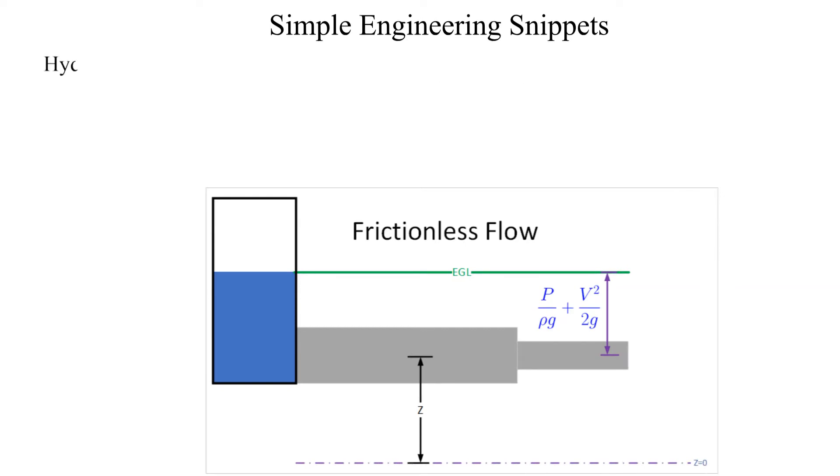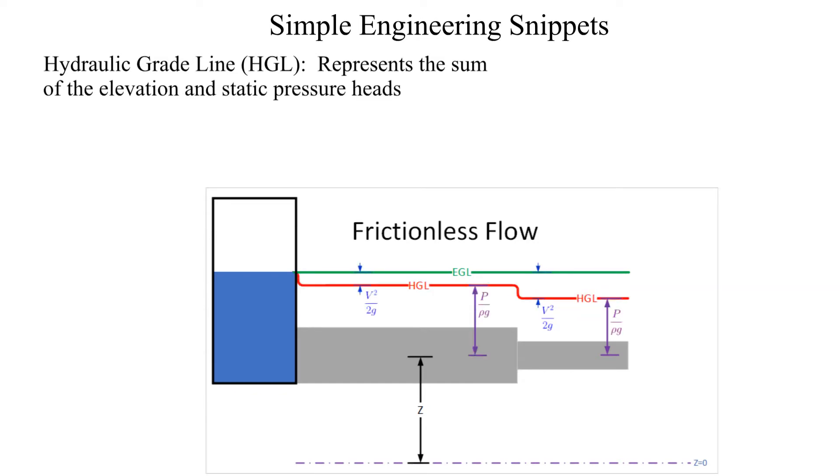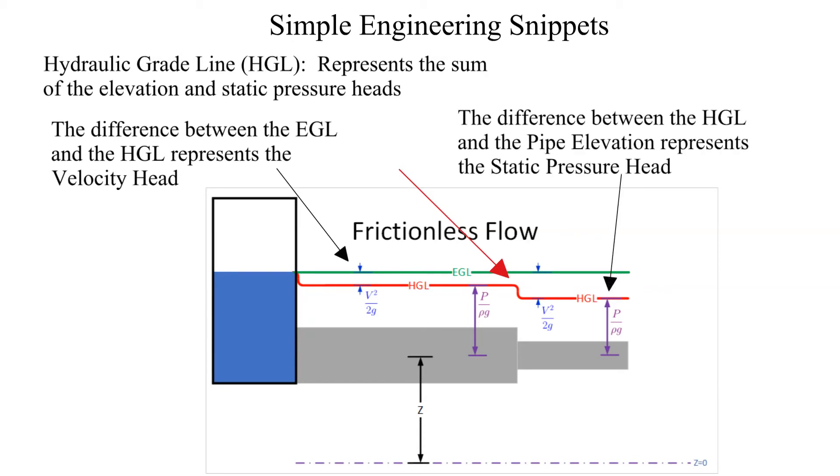The hydraulic grade line represents the sum of the elevation and static pressure heads. As shown, a change in diameter results in a change of the hydraulic grade line since the velocity and the corresponding velocity head changes with the diameter change. The energy grade line remains horizontal. The energy grade line differs from the hydraulic grade line by the velocity head. The difference between the hydraulic grade line and the pipe represents the static pressure head.